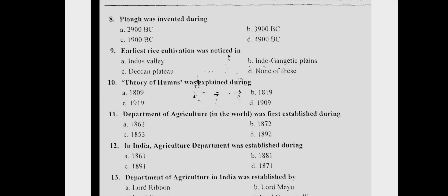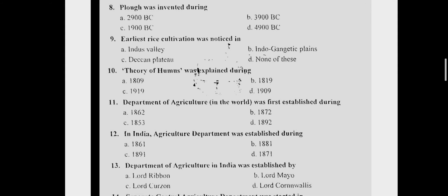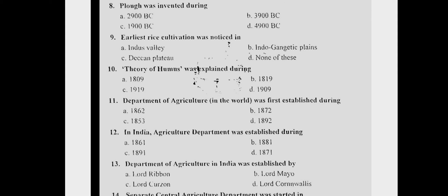Question 12: The Agriculture Department was established in India during. Answer is C.